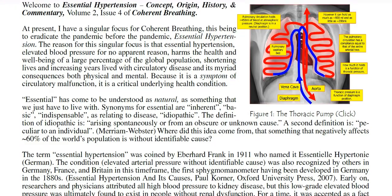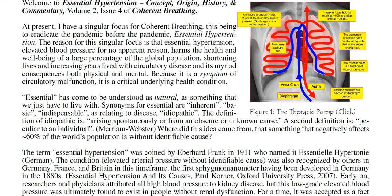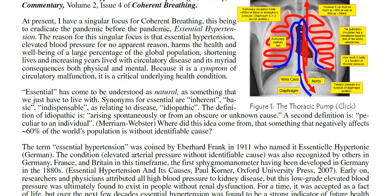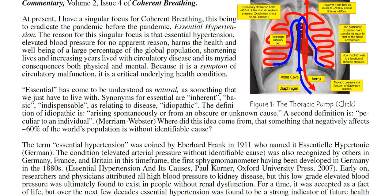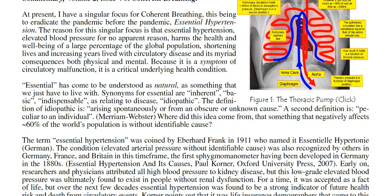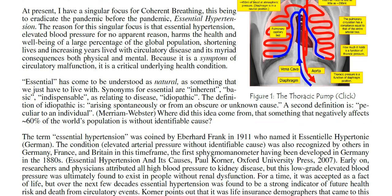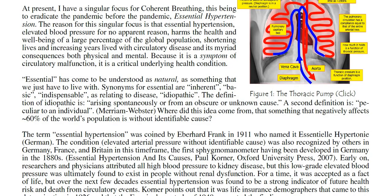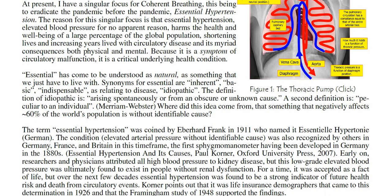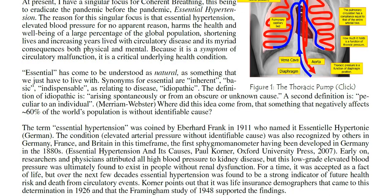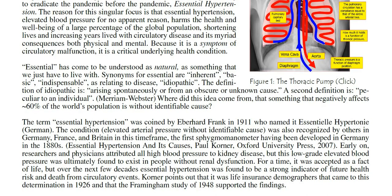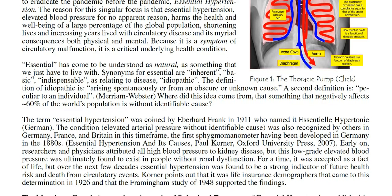The term Essential Hypertension was coined by Eberhard Frank in 1911, who named it Essentielle Hypertonie (German). The condition — Elevated Arterial Pressure Without Identifiable Cause — was also recognized by others in Germany, France, and Britain in this time frame, the first sphygmomanometer having been developed in Germany in the 1880s. Essential Hypertension and Its Causes, Paul Korner, Oxford University Press, 2007.